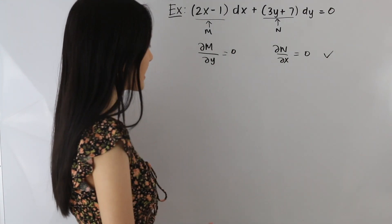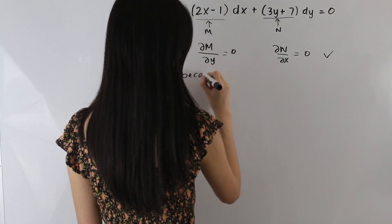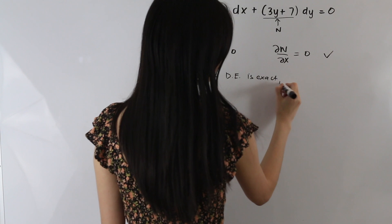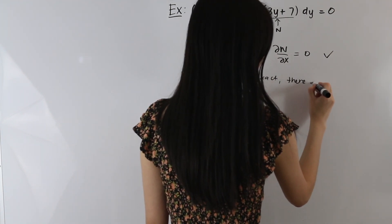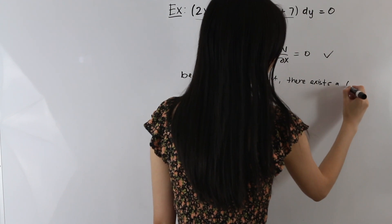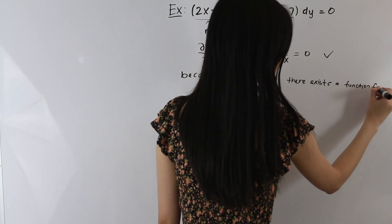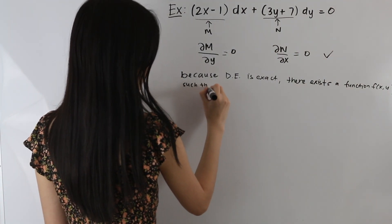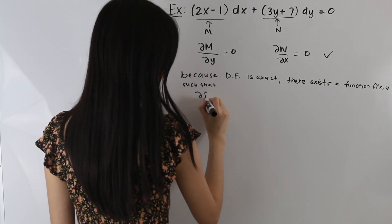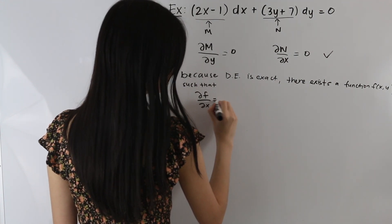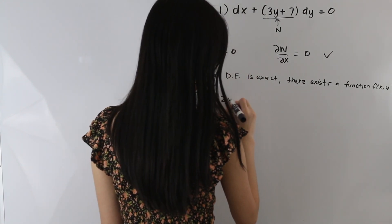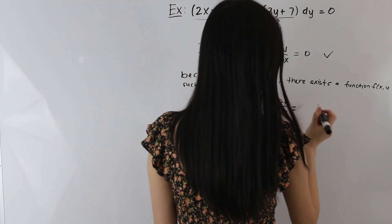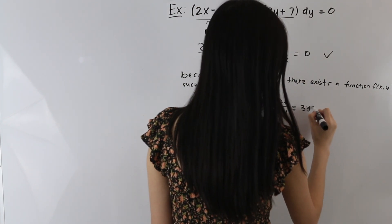Because our differential equation is exact, there exists a function f(x, y) such that the partial derivative of f with respect to x is equal to M, which is 2x − 1, and the partial derivative of f with respect to y is equal to N, which is 3y + 7.